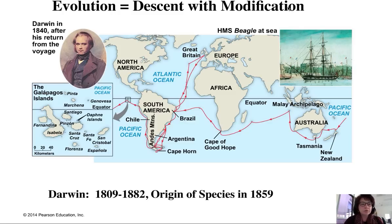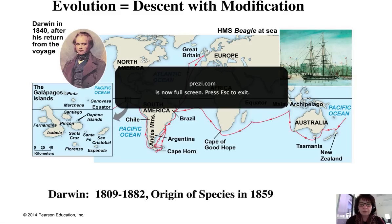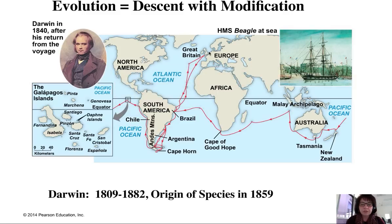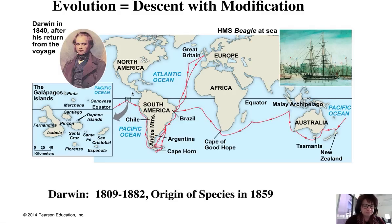On his Voyage of the Beagle, they left Great Britain with the charge of mapping the coast of South America — that's why they spent a lot of time there. They also spent time in the Galapagos Islands, off the coast of South America and very isolated. Organisms that landed there had a chance to be appropriately matched to their environment. Ones that couldn't reproduce would die, while survivors carried mutations and traits that made them perfect for their different islands.